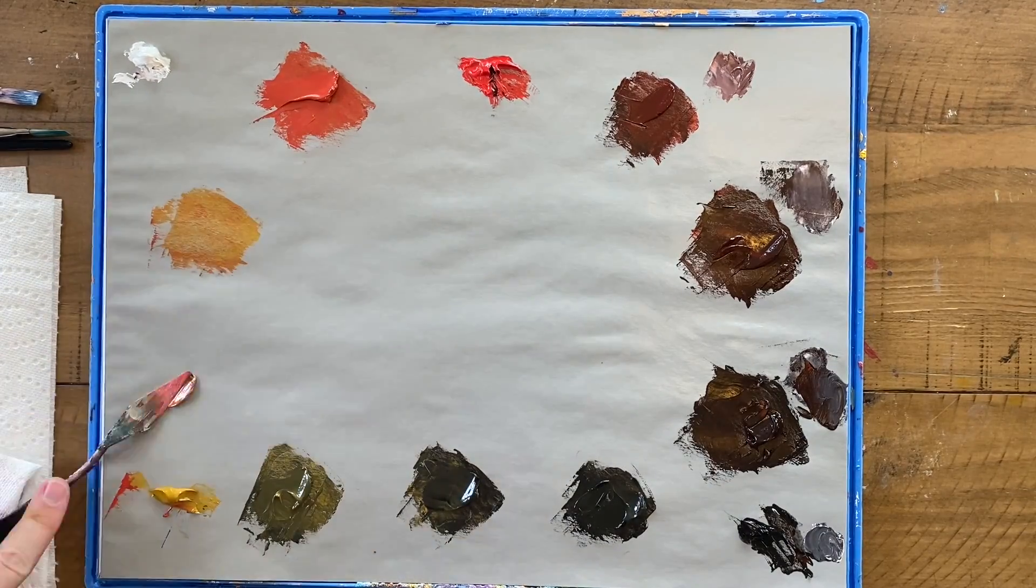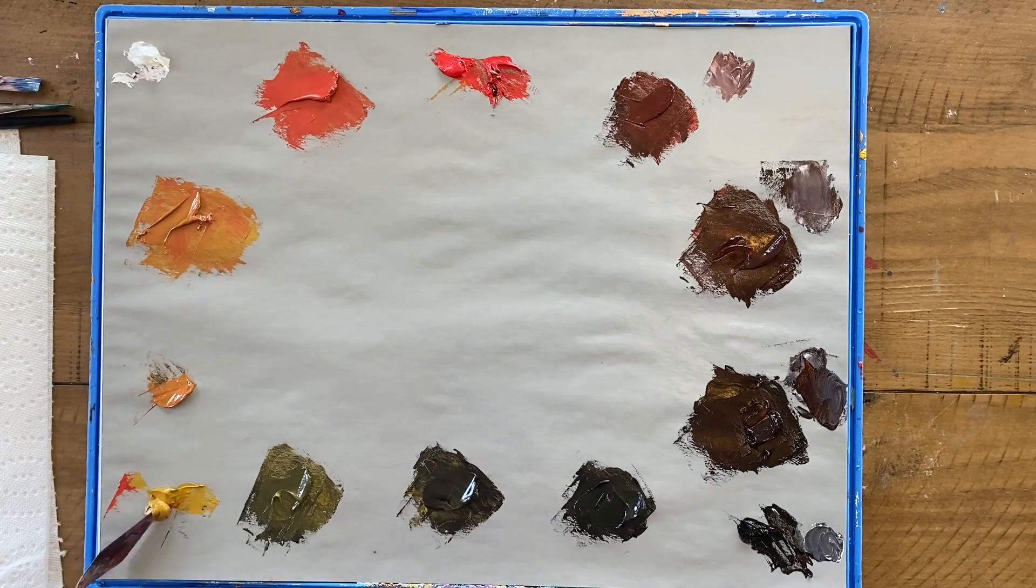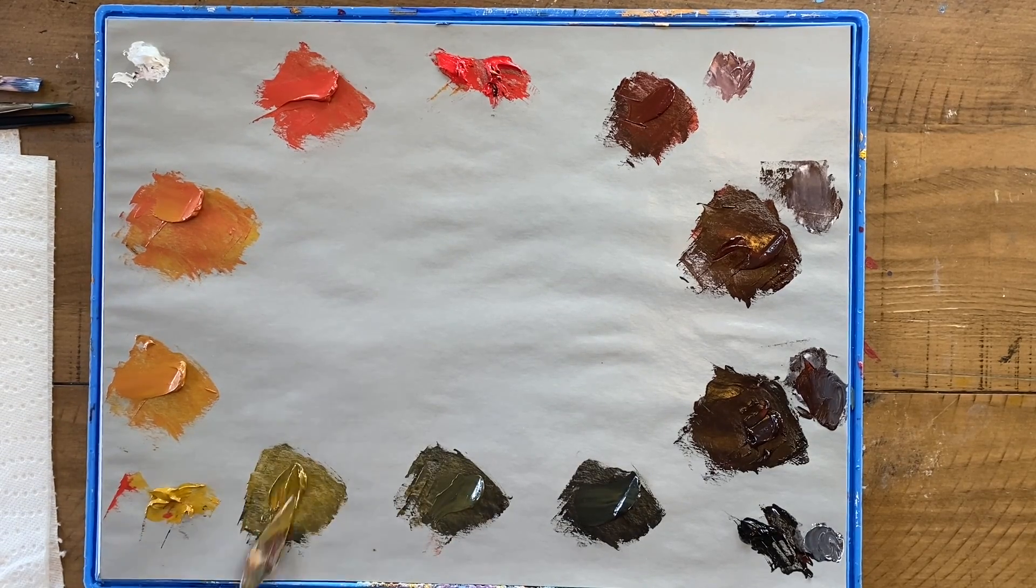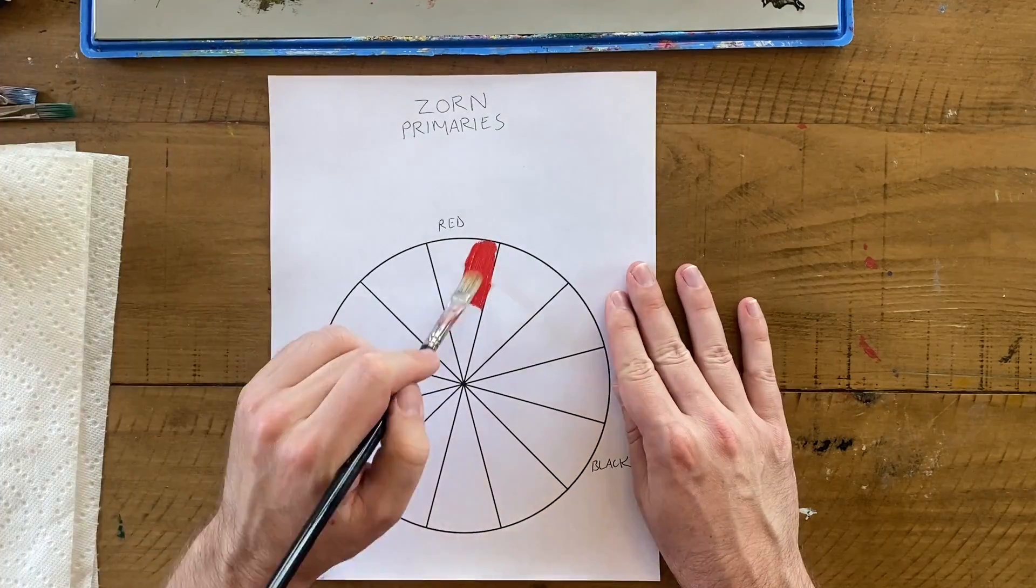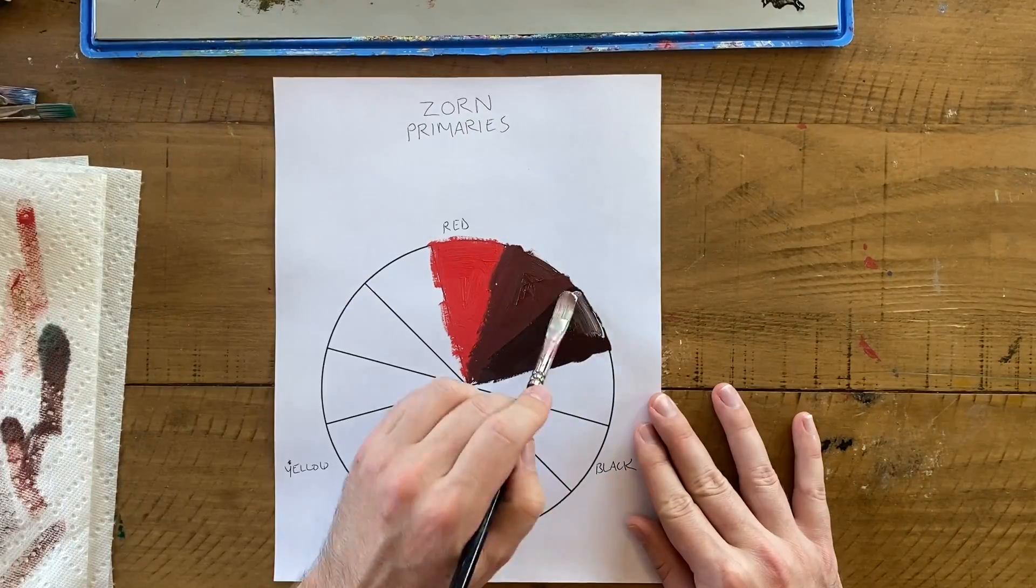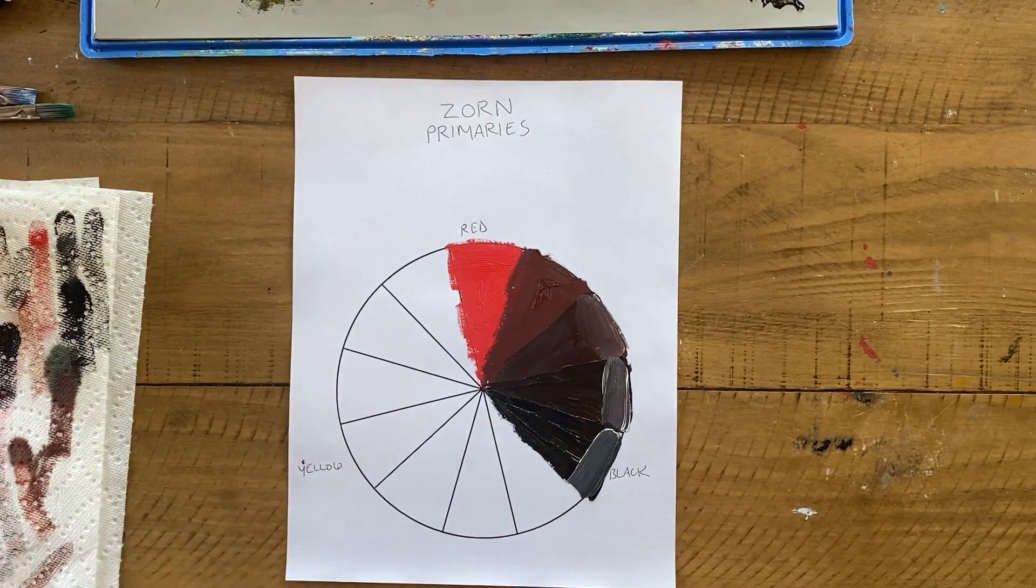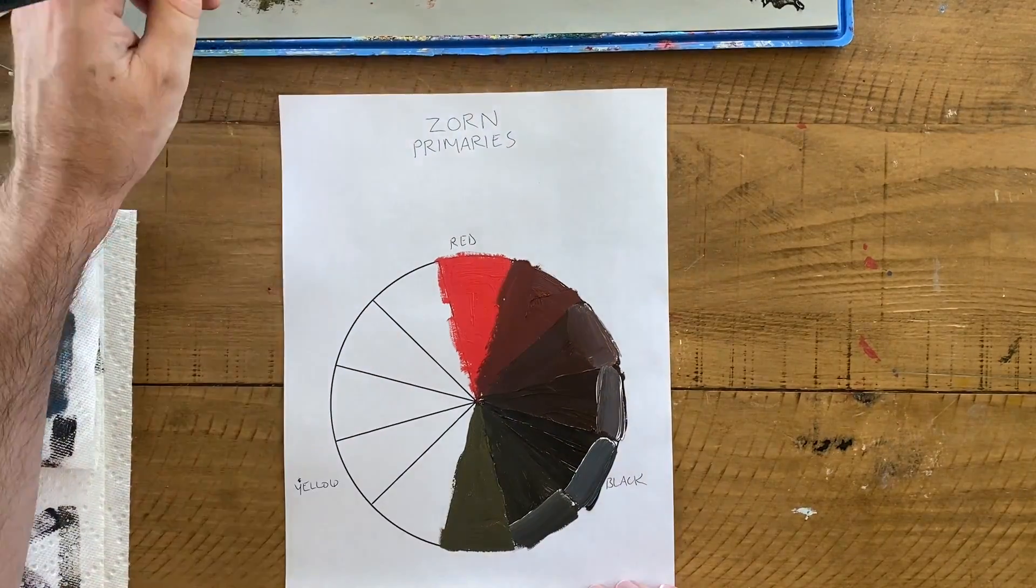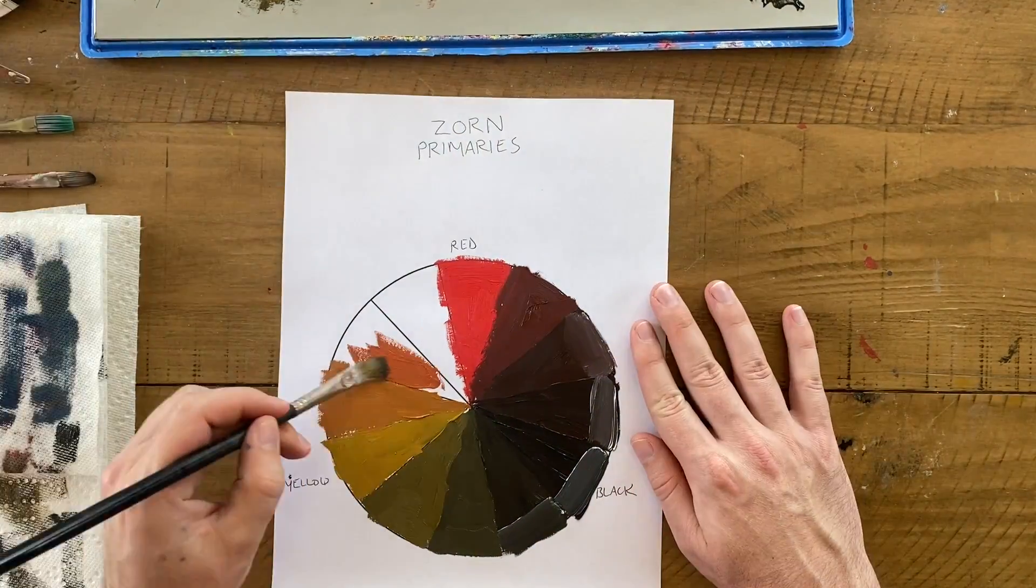So I talked about how limiting your primaries lends itself to every color in your painting hanging together better. When you have access to absolutely any color you want, I think you run the risk of your paintings looking garish and unrealistic. Think of some landscape painting that has overly green grass and overly blue sky. It kind of looks like something a child might have made. It takes a lot of subtlety and discipline to tone your colors down to make them work together, and a limited palette takes care of this naturally.